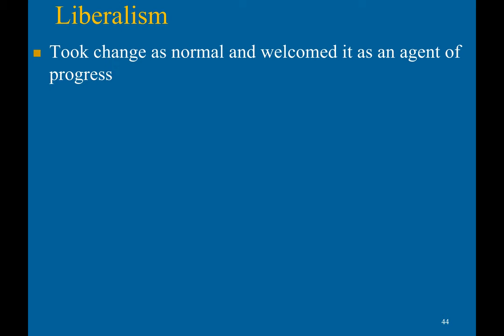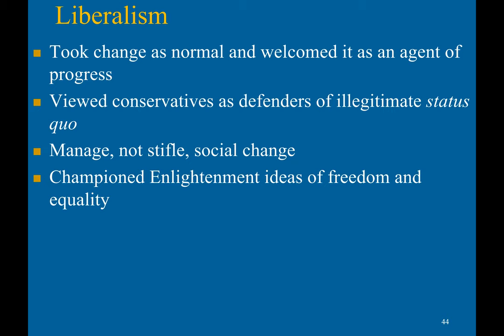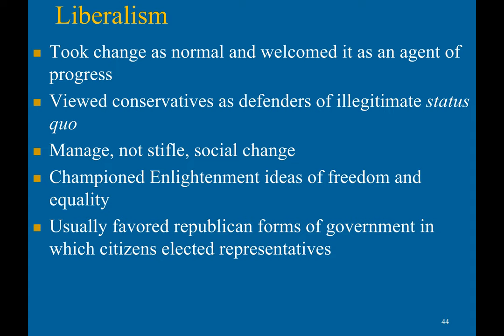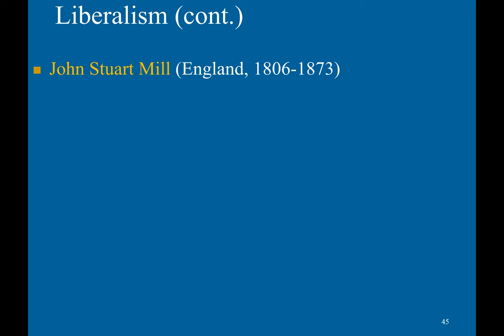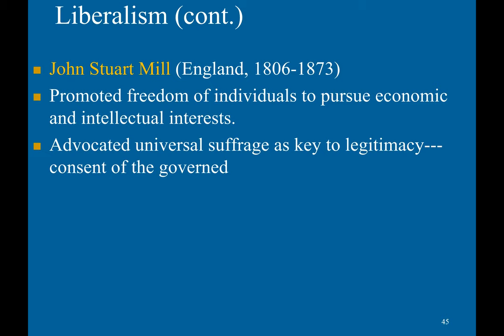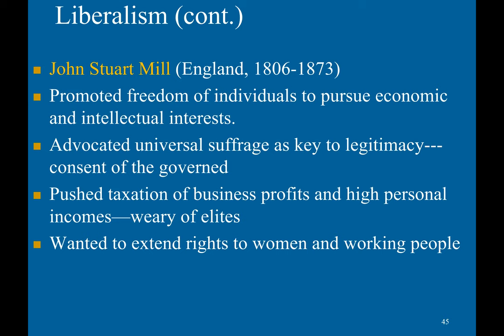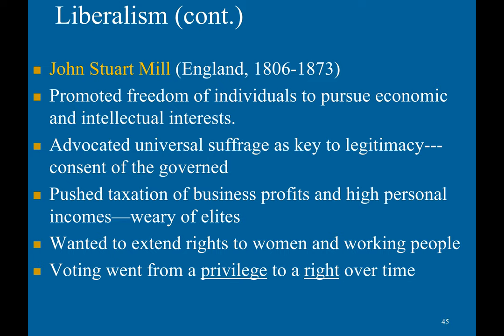Liberals viewed conservatives as defenders of the illegitimate status quo. Liberalism sought to manage, not stifle, social change. It championed Enlightenment ideas of freedom and equality and usually favored republican forms of government in which citizens elected representatives. One of its key architects was John Stuart Mill, who argued for the promotion of freedom of individuals to pursue economic and intellectual interests. He advocated universal suffrage as key to legitimacy, pushed for the taxation of business profits and high personal incomes, and wanted to extend rights to women and working people. Eventually, democracies would fulfill this desire as voting went from a privilege to a right over time.